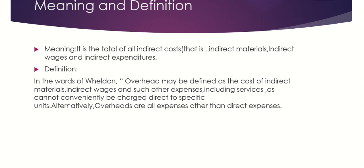Before moving on to the meaning of overheads, what do you mean by cost? Cost is the expenditure incurred. Cost can basically be classified into two categories: direct cost and indirect cost. The total of all direct costs like direct materials, direct wages, and direct expenses is termed the prime cost. The total of all indirect costs like indirect materials, indirect wages, and indirect expenditures are known as overheads.